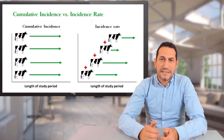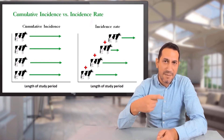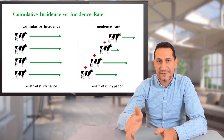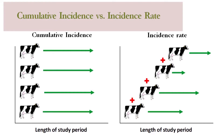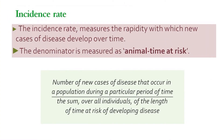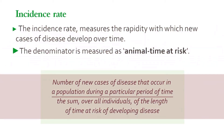When we talk about the incidence rate, we speak about the time component, and we sum up all the periods of animals at risk during the study — the period where the animals have been disease-free — and sum them up. So the denominator is composed by time itself, not by animals. We count the cases on top of this time period, which is the whole time period at risk, the animal-time at risk. The formula to calculate it is the number of new cases of the disease that occur in a population during a particular period of time, divided by the sum over all individuals of the length of time at risk of developing the disease of interest.